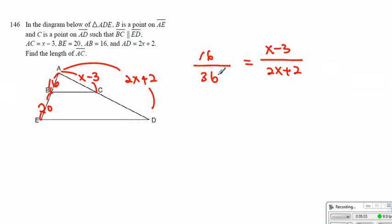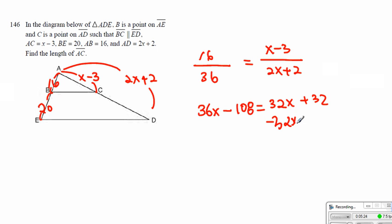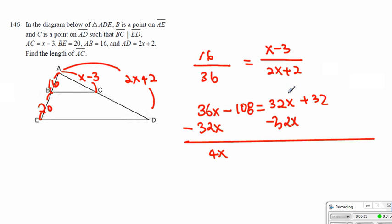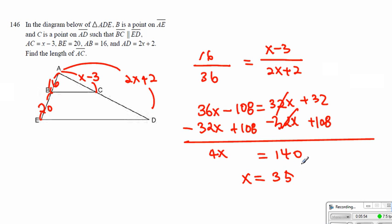We can cross-multiply them: we'll end up getting 36x minus 108, which will be equal to 32x plus 32. Then we end up getting 4x, and these two things cancel out. When we add 108 on each side, we end up getting 140. So therefore, x divided by 4x must be 35. Now, AC becomes 35, but you have to subtract 3, so therefore AC will be equal to 32.